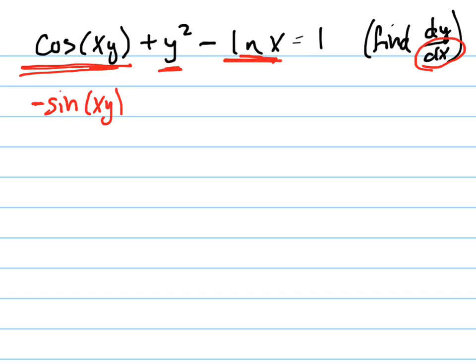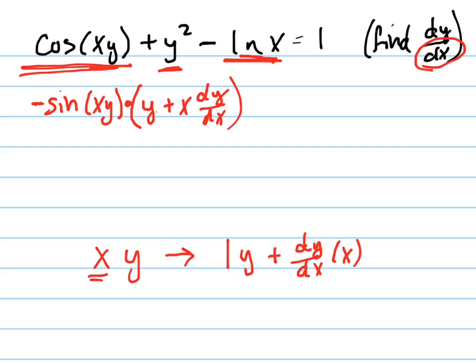Now multiply that by the derivative of the inner function. Which is going to be a product rule. The inner function is going to be a product rule, xy. So what's the derivative of xy with respect to x? It's the derivative of the first, which is 1, times the second function, which is y, plus the derivative of the second function, which is dy dx, times the first function. So that's what I've got to multiply this by, y plus x dy dx. Okay? So that's that whole mess.